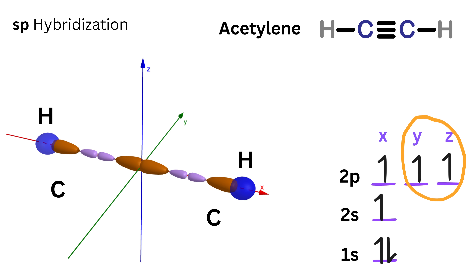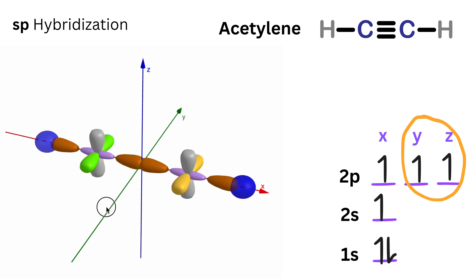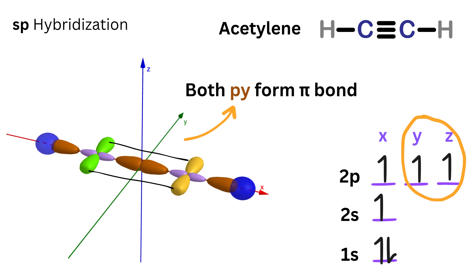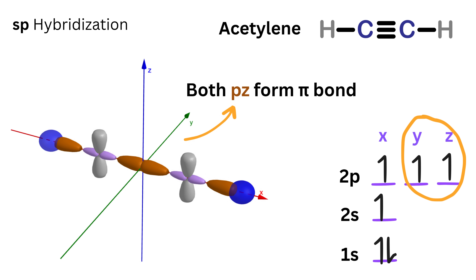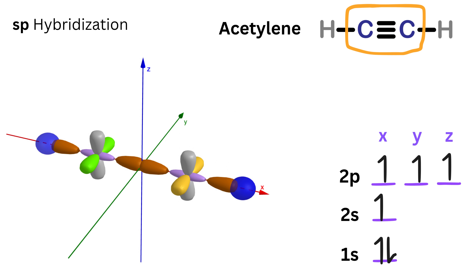After forming two sp hybrid orbitals, each carbon still has two leftover p orbitals — py and pz — that are not used in hybridization. These unhybridized p orbitals form sideways overlaps called pi bonds: py of one carbon forms a pi bond with the py of the other, and pz forms a pi bond with pz. A pi bond is formed when two unhybridized p orbitals overlap sideways, but this sideways overlap happens only after the sigma bond is already in place. So in acetylene, between the two carbons, one sigma bond and two pi bonds make a triple bond.